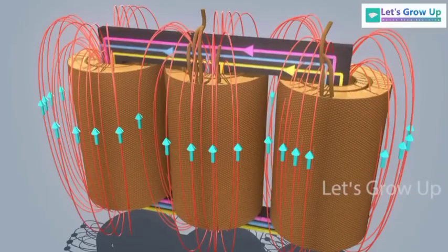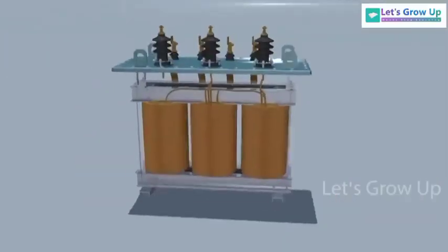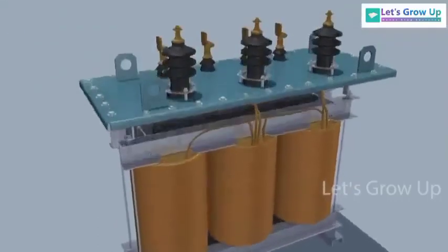Insulation is needed between the primary and secondary winding to prevent short circuits. Finally, to receive electric energy from the transformer, insulated bushings are needed.